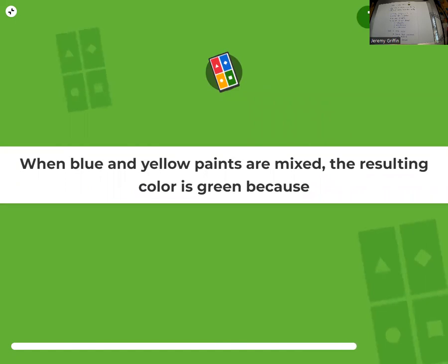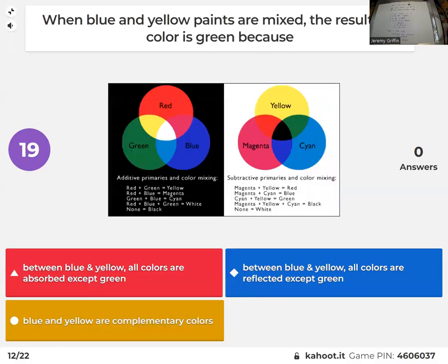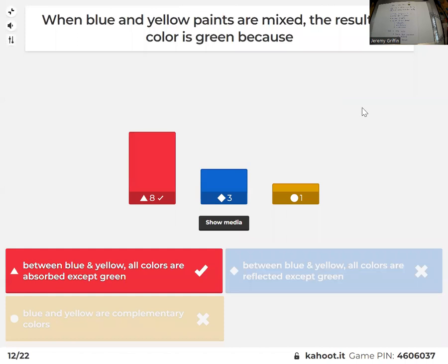When blue and yellow paints are mixed together, the result is green because color subtraction. Between blue and yellow, all colors are absorbed except for that green wavelength. Yeah, there you go.